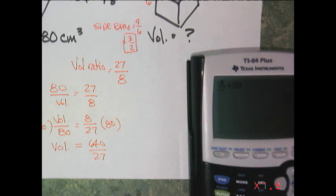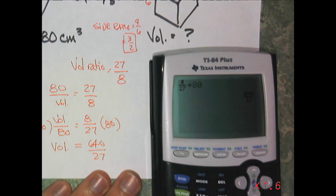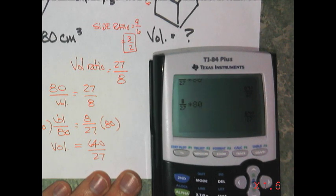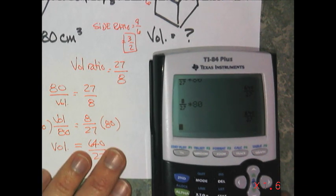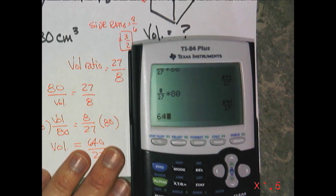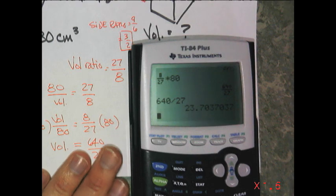And if I really wanted a decimal approximation, you know, you probably, I think you can hit enter on that. No. What is it? I have to do 640 divided by 27. I'm going to get a decimal approximation with 23.7.